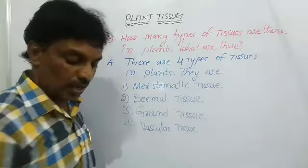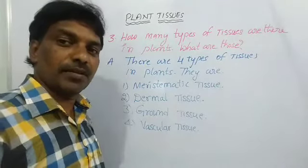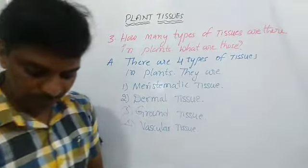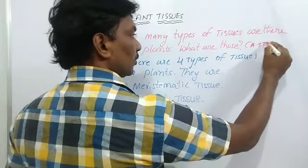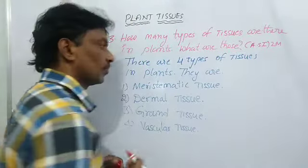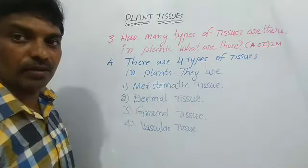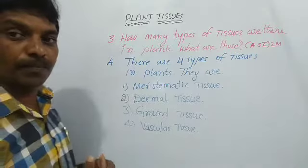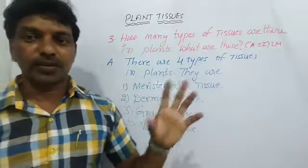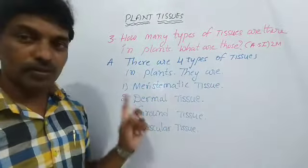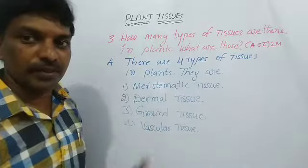This is a two marks question, Academic Standard 1 — Conceptual Understanding. How many types of tissues are there in plants? There are four types. You have to write the number and the names of the tissues present in plants. We cannot convert these questions into asking hypothesis; we can show the tissues and find out, which I will tell about one by one.